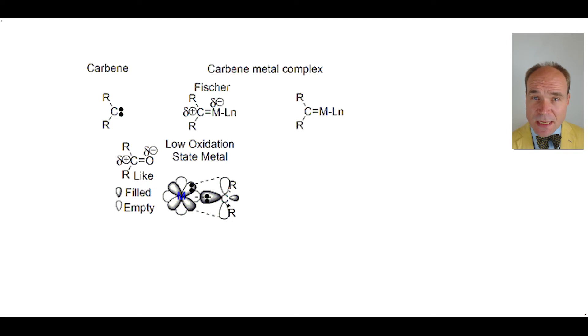The other carbene metal complex has a partially negative charge on the carbon and a partially positive charge on the metal. This is called a Schrock carbene complex. It's found where the metal is of higher oxidation state.